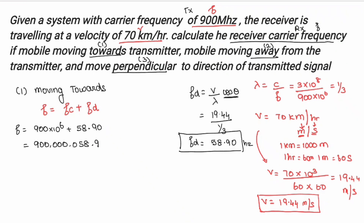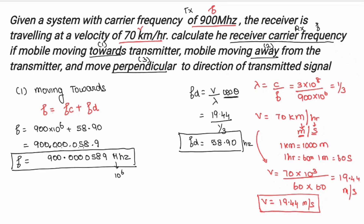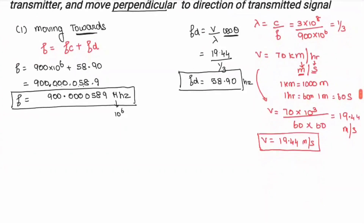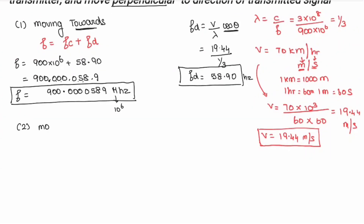Converting to megahertz, the received frequency when moving towards the transmitter is approximately 900.00005890 MHz. Moving away from the transmitter: new frequency = Fc − Fd = 900 MHz − 58.90 Hz = 899.99941 MHz approximately. Here you note that moving away, the received frequency is lower; moving towards, the frequency increases.